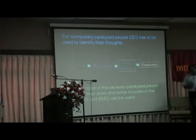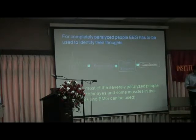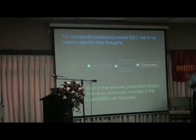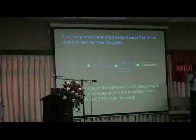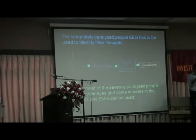Most severely paralyzed people can still move their eyes. EEG signals are very weak, but moving the eyes produces an eye signal. Because of this, eye movements can also be used to control things. Some people can also move certain muscles on the face, and with those muscle movements we amplify the signal and recognize it.